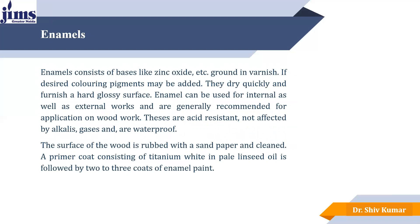Now the second component — enamel. The enamel consists of bases like zinc oxide drowned in varnish; if desired, colored pigments may be added. They dry quickly and furnish a hard glossy surface. Enamel can be used for internal as well as external wear and is generally recommended for application on woodwork — tables, chairs, doors, frames, cupboards etc. The surface of the wood is rubbed with sandpaper and cleaned. A primer coat of titanium white in pale linseed oil is applied, followed by two or three coats of enamel paint depending upon the requirement.